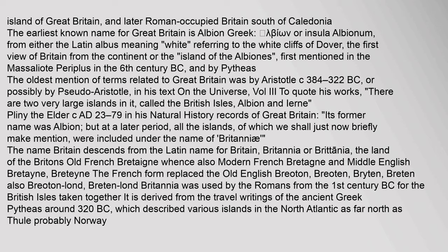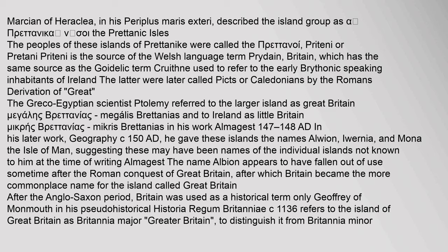Marcian of Heraclea, in his Periplus Maris Exteri, described the island group as the Britannic Isles. The peoples of these islands of Prytnike were called the Prytonoi, Pryteni or Prytoni. Pryteni is the source of the Welsh language term Prydain, which has the same source as the Goidelic term Cruthni, used to refer to the early Brythonic-speaking inhabitants of Ireland, who were later called Picts or Caledonians by the Romans.